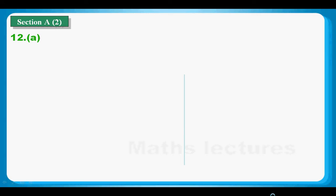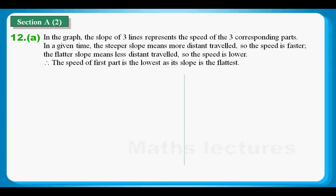For 12A, it is asking which part of the journey has the lowest speed. Let's see how I tackle this problem. In the graph, the slope of three lines represents the speed of the three corresponding paths. In a given time, the steeper slope means more distance traveled, so the speed is faster. In the same given time, the flatter slope means less distance traveled, so the speed is lower. I conclude here, the speed of the first path is the lowest, as the slope is the flattest.